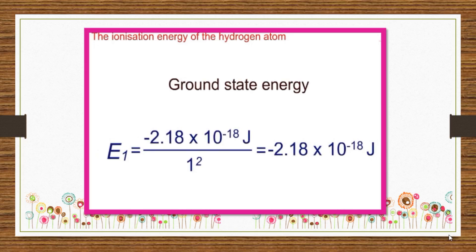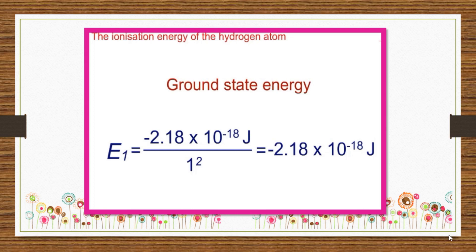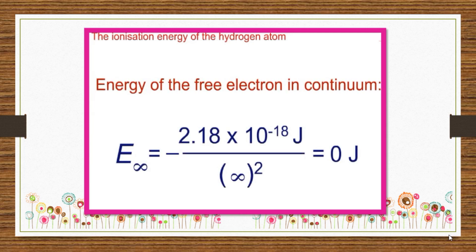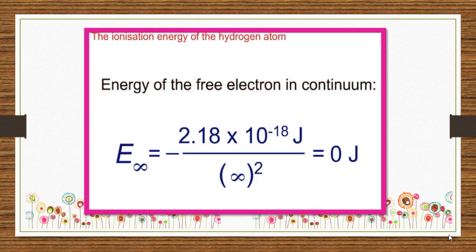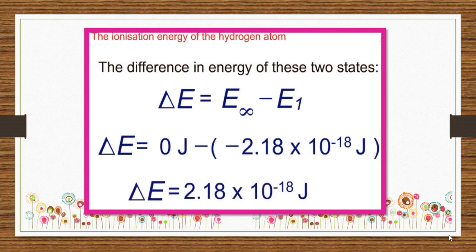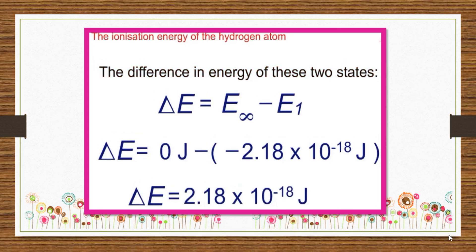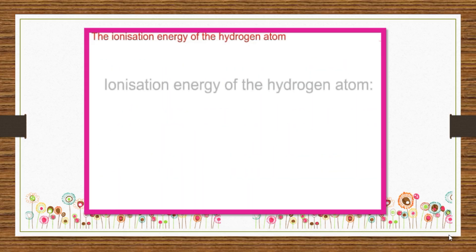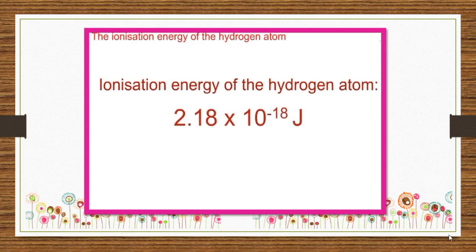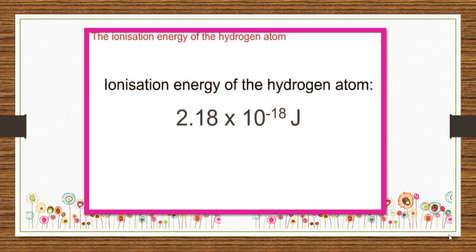Therefore, the energy of the electron in the ground state is minus 2.18 times 10 to the power of minus 18 joules. While the energy of the free electron in the continuum is zero, the difference in energy between these two states is the ionization energy of the hydrogen atom, 2.18 times 10 to the power of minus 18 joules.